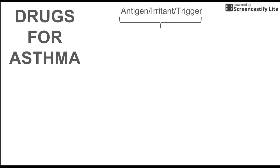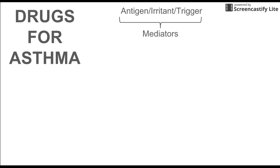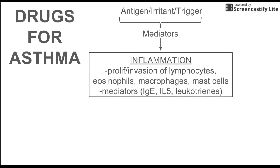These triggers are going to release some mediators that cause inflammation. The inflammation involved with asthma involves proliferation and invasion of several white blood cells, including lymphocytes, eosinophils, macrophages, and mast cells. There's also a release of several mediators, including IgE, IL-5, and leukotrienes. Each of these are important to the mechanism of action of the drugs used to treat asthma.